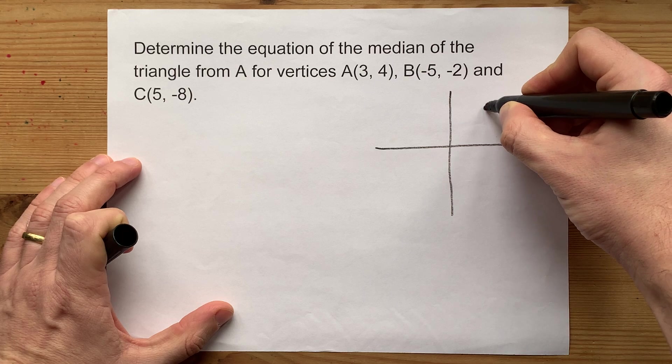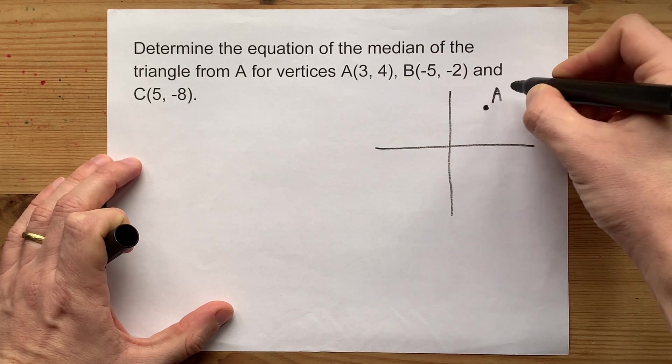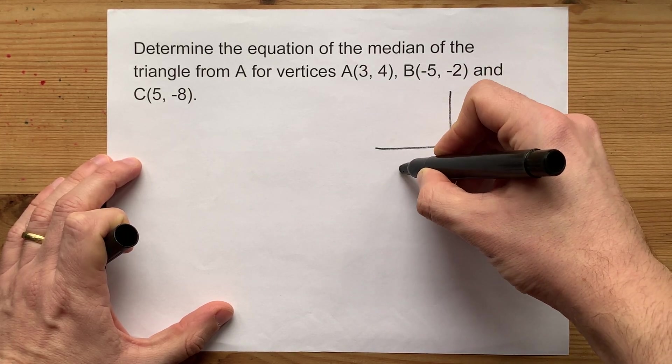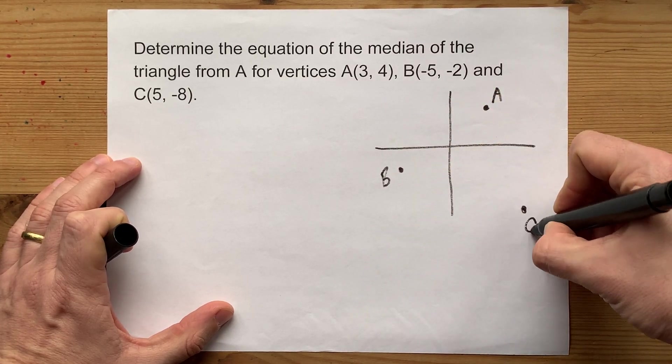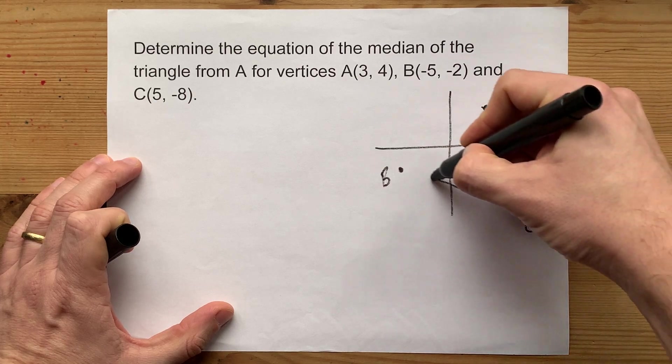Point A is 3 comma 4, which is somewhere up here. Point B is negative 5 comma negative 2, which is somewhere down there. And C is 5 comma negative 8, which is somewhere down there. There's your triangle.